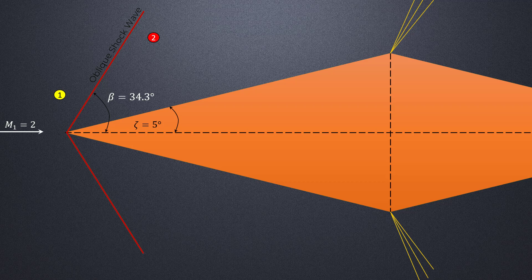From the oblique shock relation, we can calculate the Mach number after the shock to be about 1.82. We can calculate the pressure ratio across the oblique shock wave to be about 1.32.